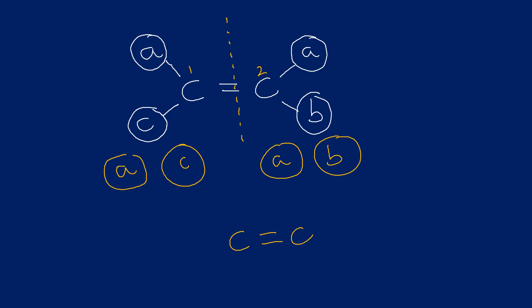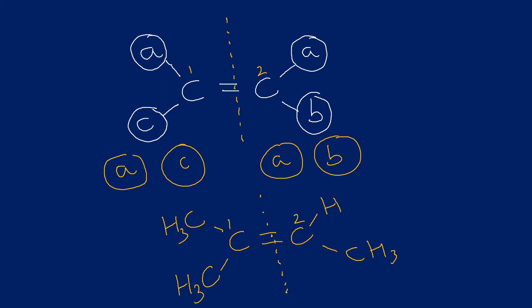Let's look at an example. On the right I've got a H and a CH3; on the left I'm going to have a CH3 and a CH3. That would be classed as an asymmetric alkene because both carbons do not have the same groups attached - the groups on the left are different to the groups on the right of the double bond.